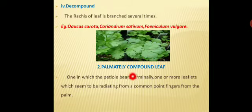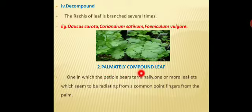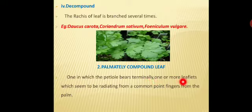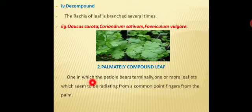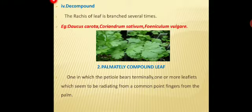Next is the palmately compound leaf. 'Palmately' means palm-like structure. The leaflets are present in a palm-like arrangement — one in which the petiole terminally bears one or more leaflets which seem to radiate from a common point, like fingers from the palm of a hand. This is called a palmately compound leaf.